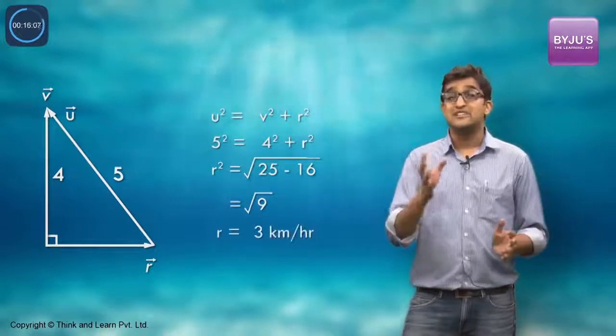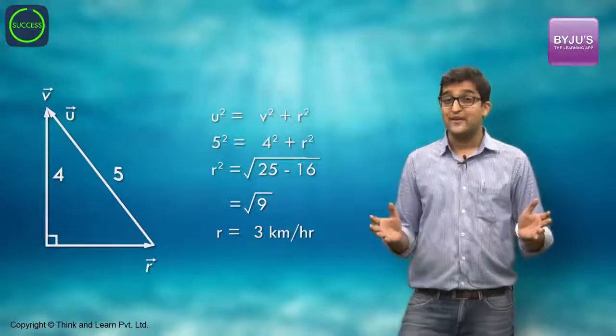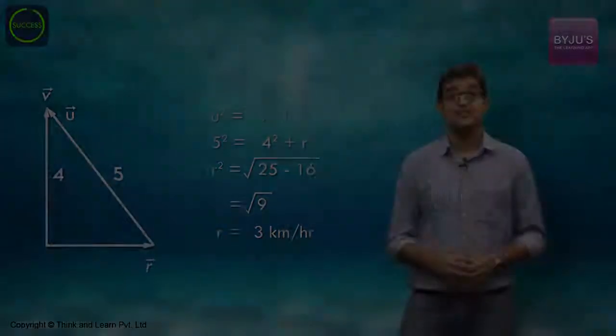The third, you know the answer should be 3 km per hour. Hence, the river speed is 3 km per hour. We've solved it in less than 30 seconds.